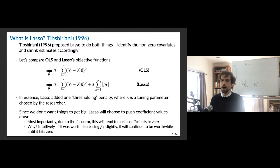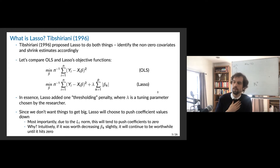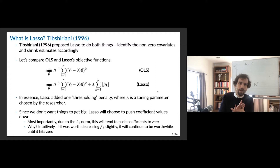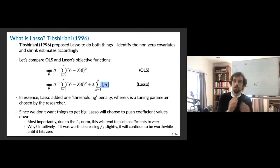The L1 norm is going to actually push coefficients to zero — all the way down to zero rather than just a little bit. If you think about the gradient of the objective function when moving around these betas, if it's worth decreasing beta k slightly, it continues to be worthwhile all the way until you hit zero. Unlike with an L2 norm on beta k — that would be called ridge regression — where you'd reduce beta k slightly and then the cost of a higher beta k won't be that high. With L1, the shadow cost of reducing a beta k stays the same, so you keep pushing it down all the way until you hit a corner solution.